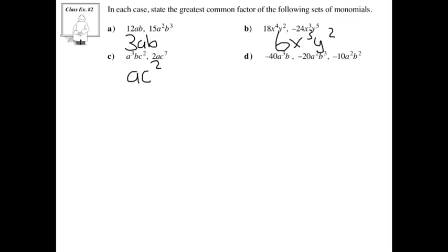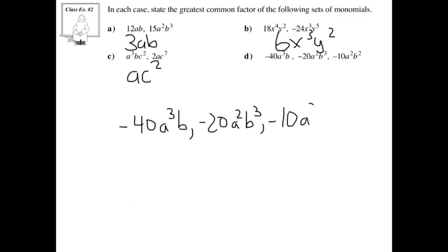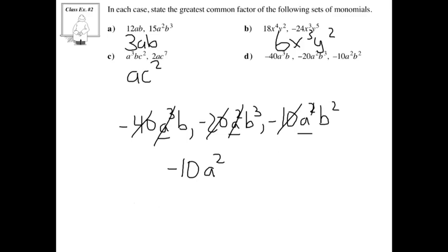Next up, we've got d: negative 40a³b, negative 20a²b³, and negative 10a²b². The greatest common factor for the coefficients is going to be negative 10. Next, we've got the a's: a cubed, a squared, and a squared — we know we have at least a squared. Then for the b's, you've got b, b cubed, and b squared — we know there's going to be at least a b. So this will be your greatest common factor for d: negative 10a²b.